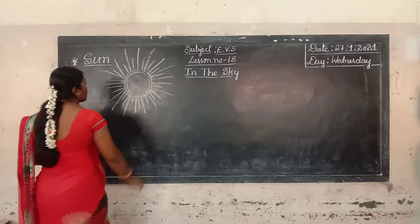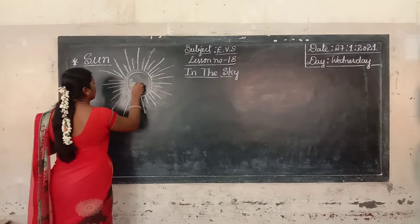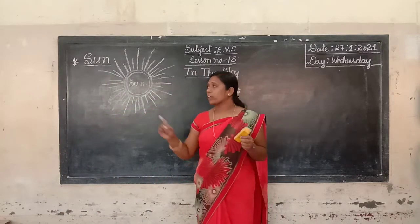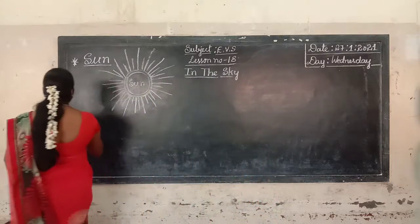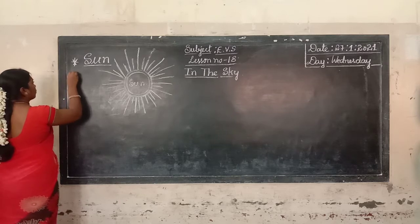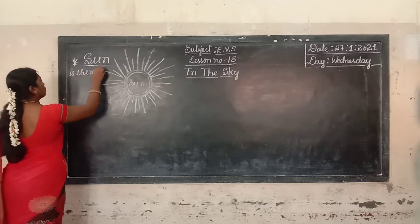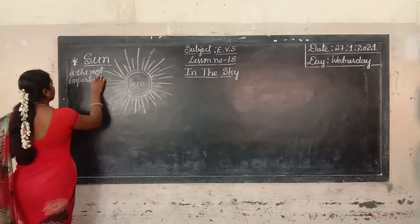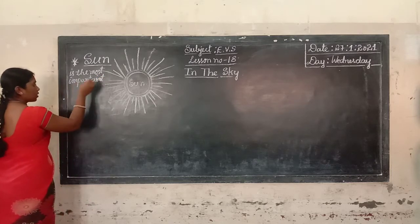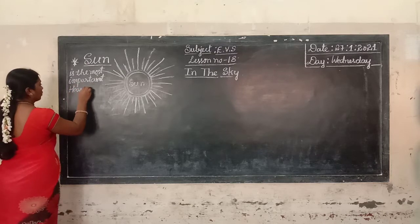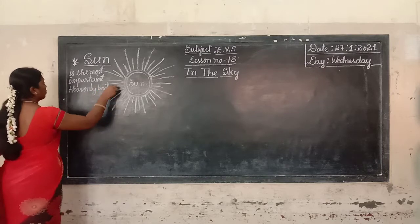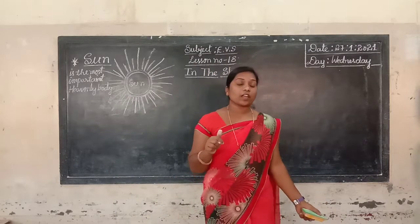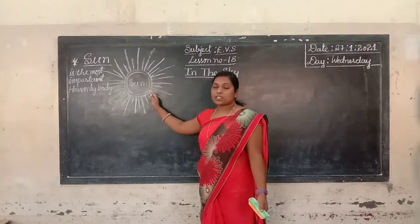So children, what is this? This is the sun. Sun is the most important heavenly body. It is a big star. Sun is the king of the stars.